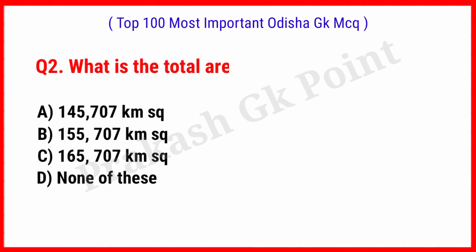Next question: What is the total area of Odisha? Answer: Option B, 155,707 square kilometers.